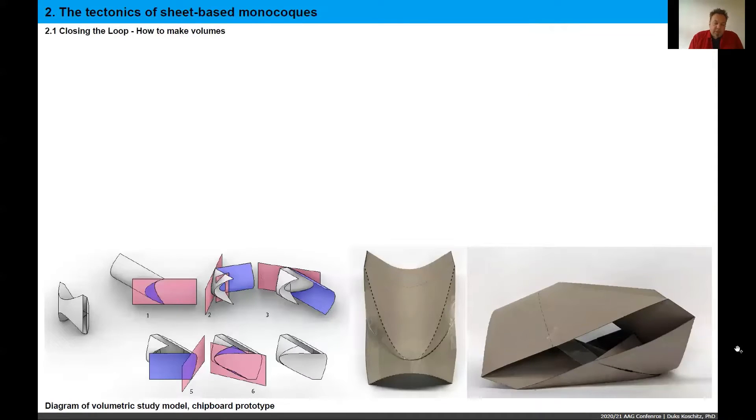The first step that we needed to undertake was to understand how can we create a volumetric structure, since monocoque is a volumetric assembly. And this bottom left diagram here shows you how, through mirror reflections, you can manipulate a surface such that it meets itself at the end. The right is a cardboard prototype that shows us how this loop can be closed. There's also a structural piece on the inside. So this was the first step in terms of understanding what should the design approach be in order to arrive at a volumetric configuration.